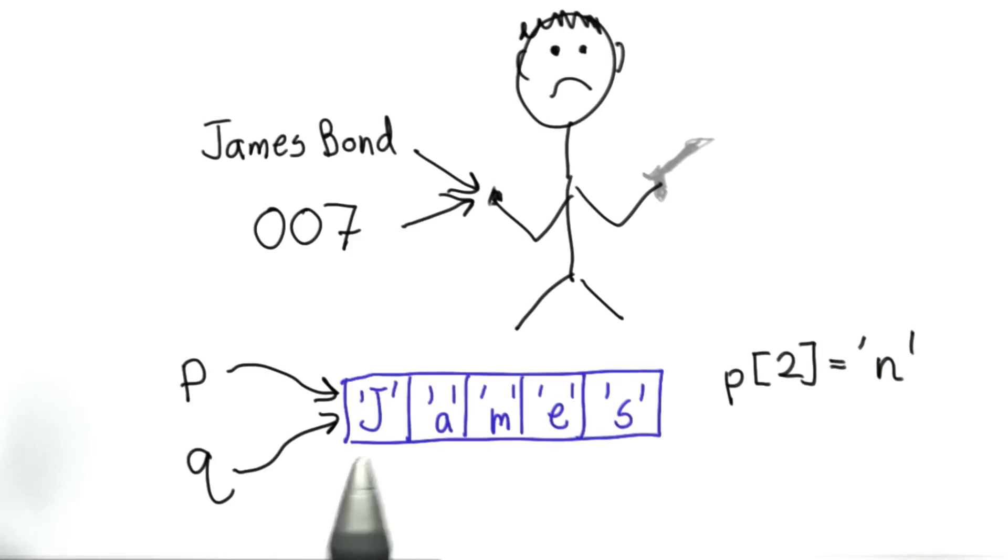So if we did an assignment using P to change the value in the second position on P, that also changes the value the name Q refers to. If we do an assignment like this,